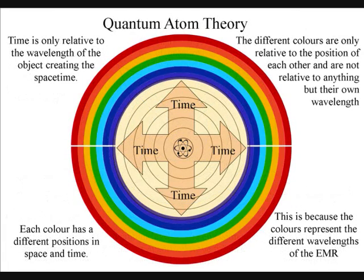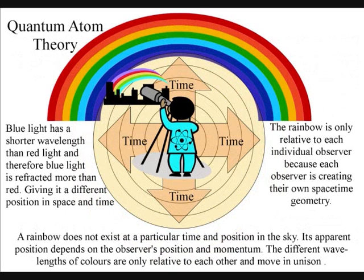Time is only relative to the wavelength of the object creating the space-time. Once again, this can be seen because light of different colours have different wavelengths. Blue light has a shorter wavelength than red light, and therefore blue light is refracted more than red.